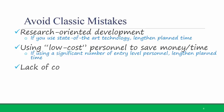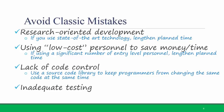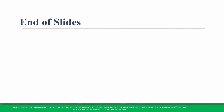A third mistake to avoid is lack of code control. You may think that you can rely on your responsible programmers to coordinate with each other on when they will be editing the code, but it's best if you can use a source code library to keep the programmers from changing the same code at the same time, such as those discussed on the previous slide. The fourth classic mistake is inadequate testing. You need to always allow sufficient time for formal testing of your system. If you can avoid these classic mistakes, your programming process should go very smoothly.